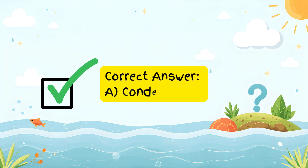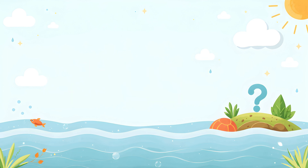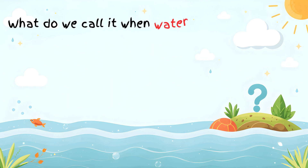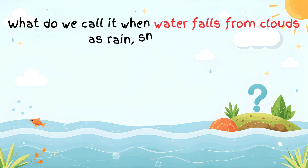When clouds become too heavy, water falls back to the ground as precipitation. Condensation. What do we call it when water falls from clouds as rain, snow, or hail?